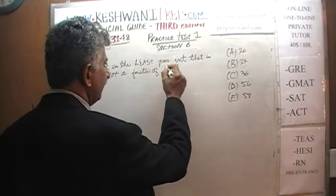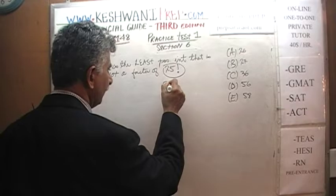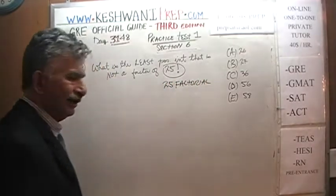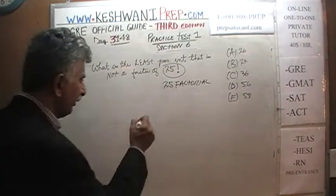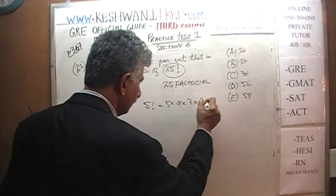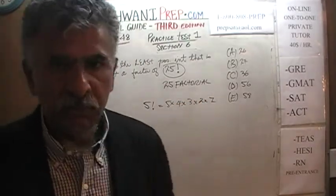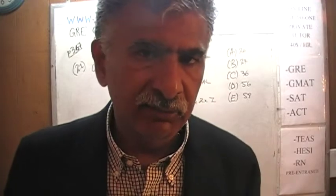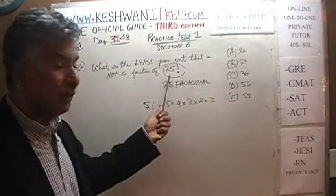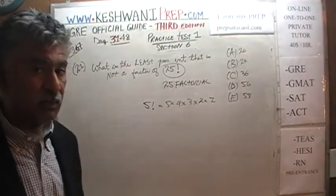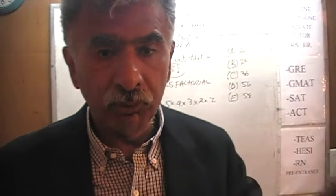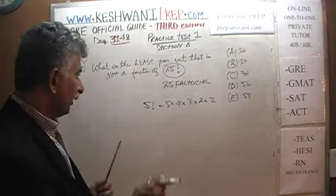First thing we need to understand is this quantity: 25 factorial. This is read as 25 factorial. For example, 5 factorial simply means 5 times 4 times 3 times 2 times 1. Seven factorial would be 7 times 6 times 5 times 4 times 3 times 2 times 1. So 25 factorial is 25 times 24 times 23 times 22 all the way down to 1 — it's a huge number.